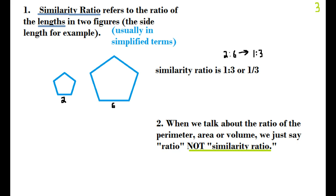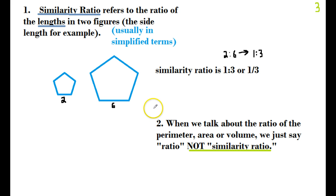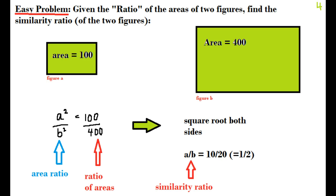The similarity ratio refers to the ratio of the lengths in any two figures. Lengths can be things like radii, heights, or side lengths — always length, not area or volume. Here we have a similarity ratio of 2 to 6, which reduces to 1 to 3, and we can derive the similarity ratio from the lengths alone when looking at these two pentagons.